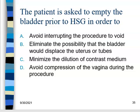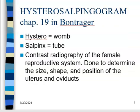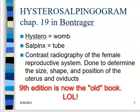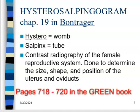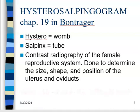Now you've seen the presentation on HSGs. This is in the 10th edition, Chapter 19. In the old green Bontrager book it's on page 718, and in the white book it's on page 724. Read all that material — there are about three pages of HSG information — and if you know that stuff, you'll be good to go for the test next week.